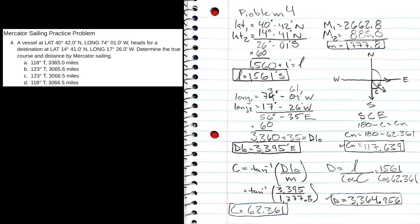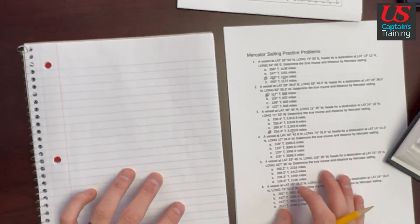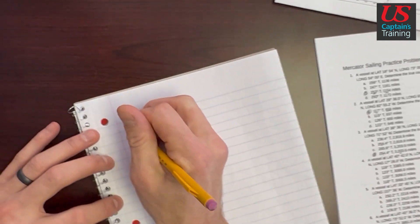Hey, Neil Smith here. In this video we use Mercator Sailing to solve for true course and distance to a destination, given the coordinates of the start point and the destination. Mercator Sailing, Practice Problem 4.